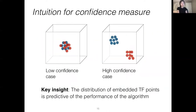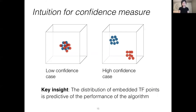The key insight of our confidence measure is that the clusterability of the embedded TF points is predictive of the quality of the separation. Intuitively, if the points are poorly separated into clusters, as in the picture on the left, then we expect lower separation quality. If the points are well separated, as in the picture on the right, then we would have higher confidence in the separation quality. So we develop our confidence measure via an analysis of the embedding space — specifically, measuring the clusterability of the embedded points.